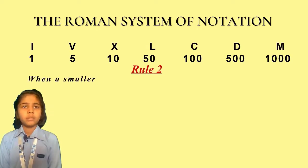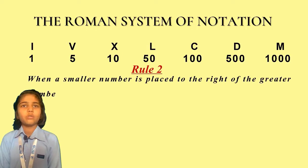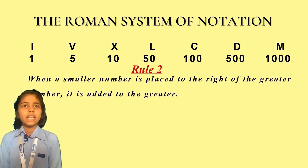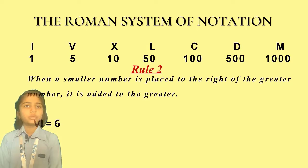Rule number 2. When a smaller number is placed to the right of the greater number, it is added to the greater. For example, VI equals 6, XV equals 15, CX equals 110.